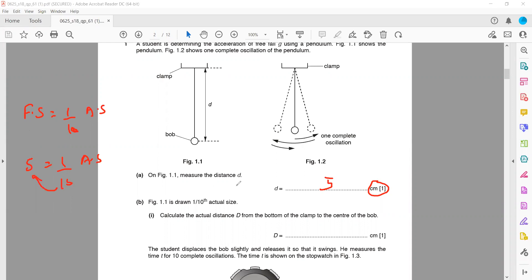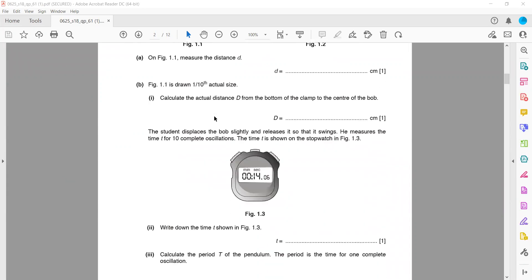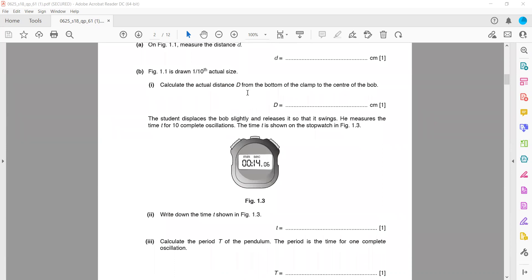For actual size, this 10 will be multiplied, so actual size will be 10 times, which equals 50 centimeters. So 50 centimeters is the actual size, but according to the figure it's represented by 5 centimeters. Using the scale given, you can work out the actual size. The student displaces the bob and releases it.